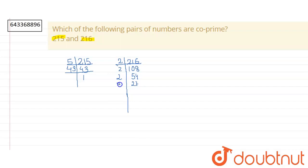Now, 3 into 9, 3 into 3, 3 into 1. So, these are the factors of 216.